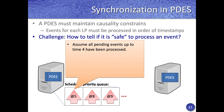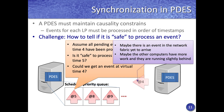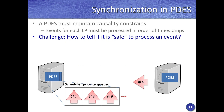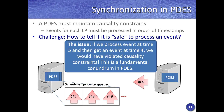Assume all pending events up to virtual time 4 have been processed. The key question is: is it safe to now process an event at virtual time 5? The challenge is that we could potentially receive an event at time 4 — from the network fabric or from compute nodes that are slightly behind — that we just haven't received yet. If we process event 5 and then later receive event 4, we would have violated causality and the simulation would no longer be correct.